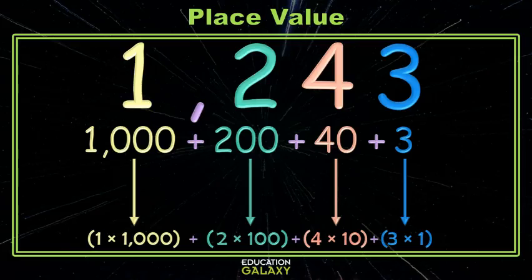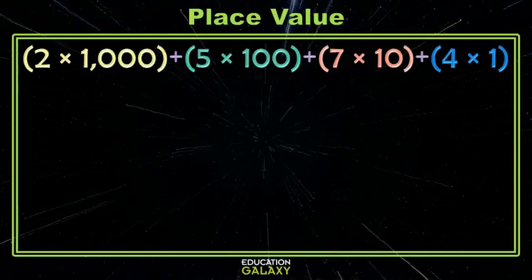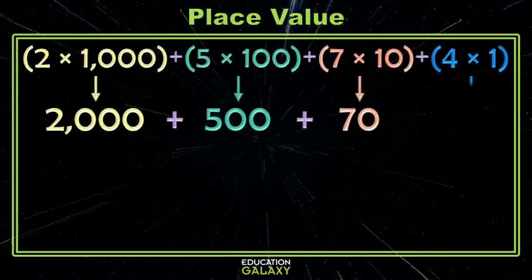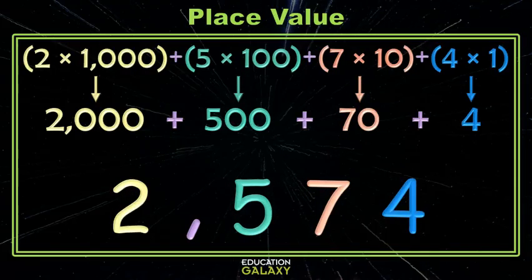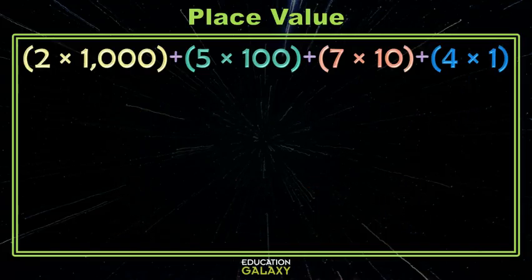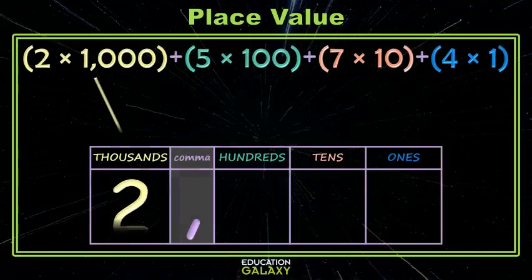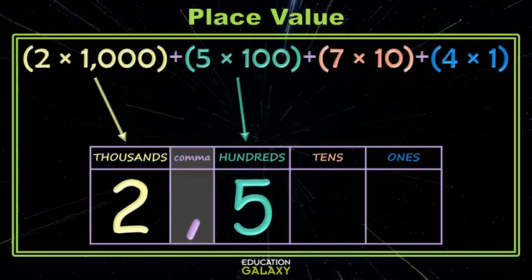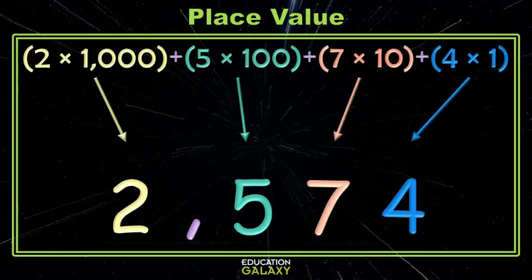And if you're wondering if it works the other direction, of course it does. We could write a number in standard form by doing all of the multiplication and then all of the addition, and we would end up with our value. But we could just recognize that the expanded notation tells us exactly where each number goes. This 2 times 1,000 means we have a 2 in the thousands place. This 5 times 100 means we have a 5 in the hundreds place. 7 times 10 means we have a 7 in the tens place, and 4 times 1 means we have a 4 in the ones place. And now you know many different ways to use place value to write and represent numbers.